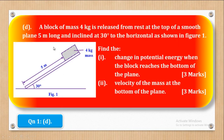Now we go to part D. Part D says: a block of mass is released from rest at the top of a smooth plane 5 m long and inclined at 30 degrees to the horizontal as shown in figure 1. Roman 1 asks for the change in potential energy when the block reaches the bottom — three marks. Roman 2 asks for the velocity of the mass at the bottom.